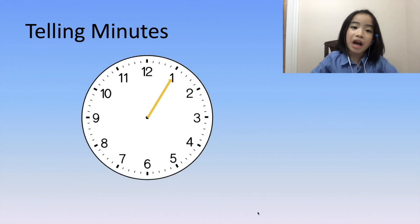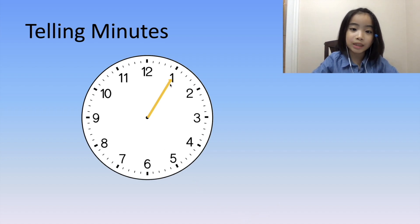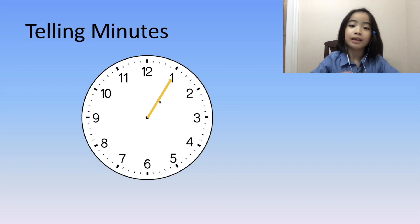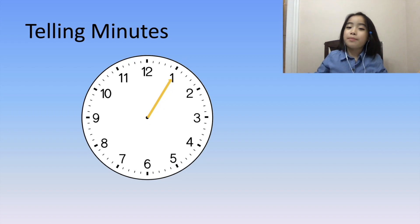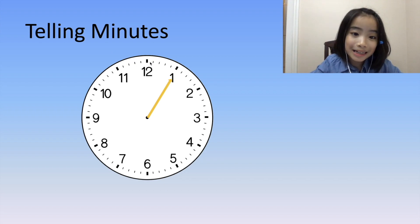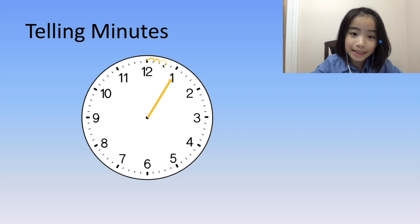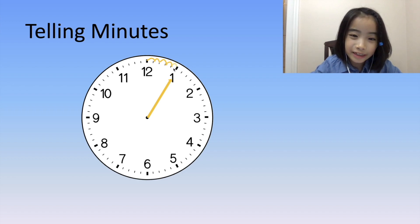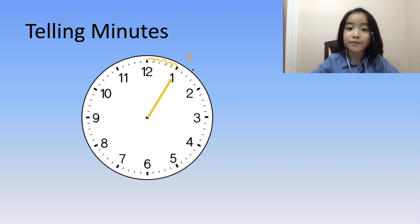Now, let's talk about the minute hand. The minute hand is pointing to the 1. Does it represent 1 minute? Well, 1 little space is 1 minute, 2 minutes, 3 minutes, 4 minutes, and 5 minutes. So the 1 is actually 5 minutes.